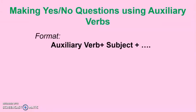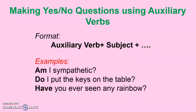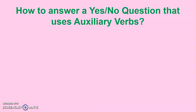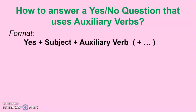In making a yes/no question using auxiliary verbs, begin the question with the auxiliary verb, followed by the subject, plus the rest of the question. For example: 'Am I sympathetic?' 'Do I put the keys on the table?' 'Have you ever seen a rainbow?' Always remember this pattern. In English, saying 'Yes, I do' or 'No, I don't' is more polite than just saying yes or no.